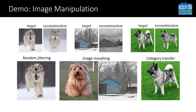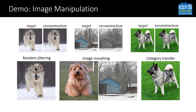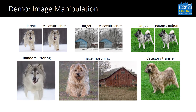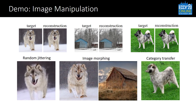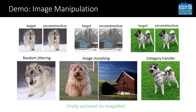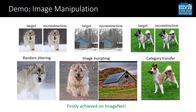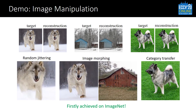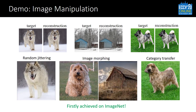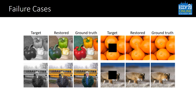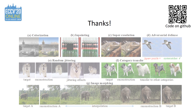This demo shows the image reconstruction process and the image manipulation effects after reconstruction. Our method allows the generative property of GAN to be applied to real complex images. To our knowledge, it is the first time that these effects are achieved on the ImageNet dataset. Here shows some challenging cases where our method fails, such as when there are multiple different objects or small human faces in the image. You are welcome to use our code on GitHub. Thanks for listening.